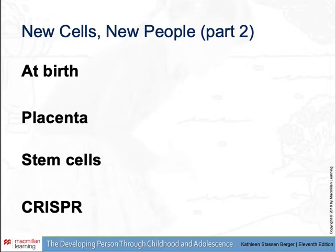At birth, the zygote has become 10 trillion cells, and each cell carries a complete copy of genetic instructions. In the placenta, this allows for early genetic testing. Stem cells result from early duplication and division and are able to produce any other cell. You may have heard of CRISPR — a gene editing technique that is forbidden for humans, but has been used to experiment on various animals to create clones.